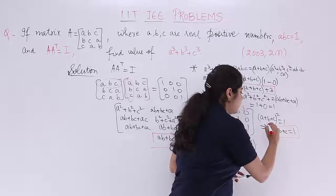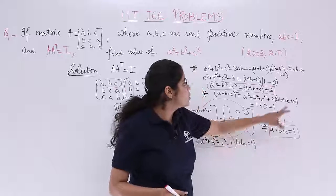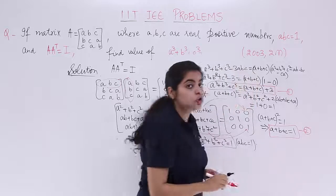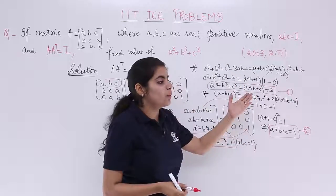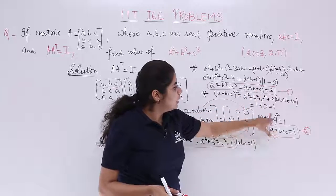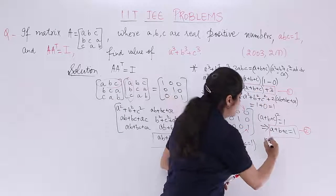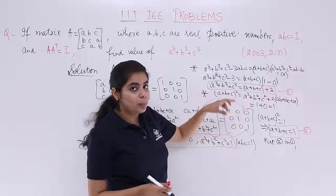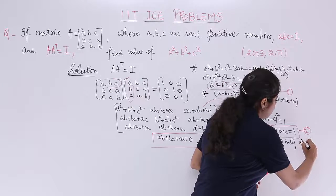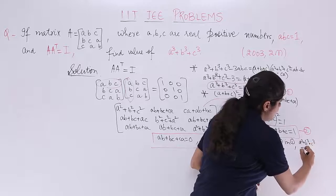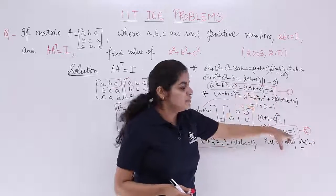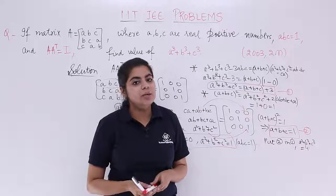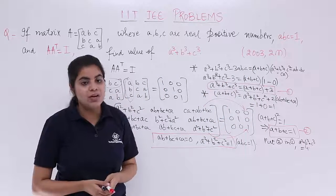Now we put A + B + C = 1 back into equation 1: A³ + B³ + C³ = (A + B + C) + 3 = 1 + 3 = 4. So the final answer to this IIT JEE problem from 2003 for 2 marks is A³ + B³ + C³ = 4.